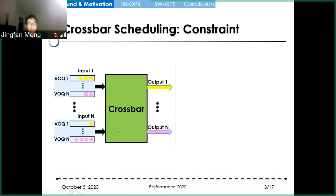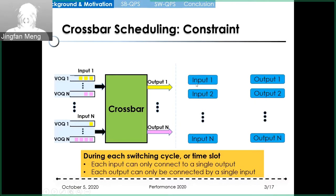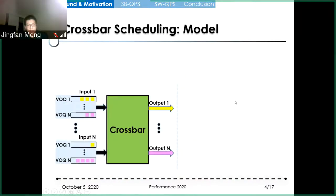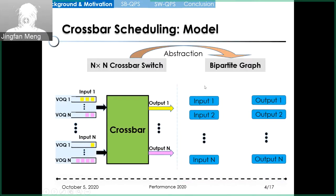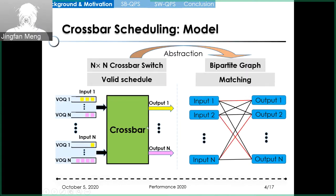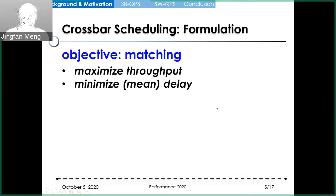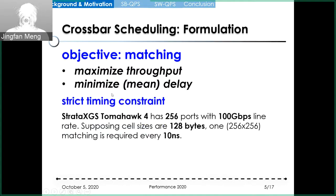The crossbar has a constraint that during each time slot, each input port can only connect to at most one output port, and vice versa. We model this constraint with a bipartite graph model. In this model, the input ports and the output ports are two distinct vertex sets, and each valid crossbar schedule corresponds to a matching in this bipartite graph. So the objective of the scheduler is to compute high-quality bipartite graph matchings. By high-quality, we mean this matching could achieve maximal throughput and minimal queueing delay. This is a challenge because each matching is needed for each time slot.